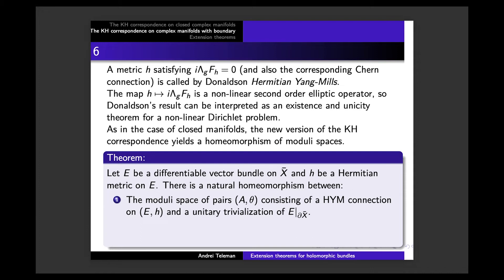We consider the moduli space of pairs (A, θ) consisting of a Hermitian-Yang-Mills connection on E,H and a unitary trivialization on the restriction to the boundary. Instead of looking only at Hermitian-Yang-Mills connections up to gauge equivalence, we look at gauge equivalence classes of pairs (A, θ), where θ is a unitary trivialization of the restriction to the boundary. People in geometry call this 'framing' — we complicate the problem, but this is the correct way of proceeding.